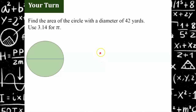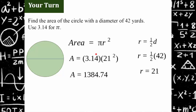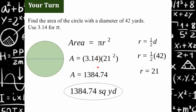Try another one. This time you have a circle with a diameter of 42 yards, and you're going to use 3.14 for pi. Go ahead and hit pause, then come back and hit play when you're ready to check your work. Welcome back. The area is equal to pi r squared. We have the diameter of 42, so we first have to calculate the radius. Since the radius is half of the diameter, half of 42 is 21. We substitute in: pi is 3.14, the radius is 21. On your calculator, 21 times 21, then multiply by 3.14, to get 1,384.74 square yards. Keep in mind that your units are squared units.